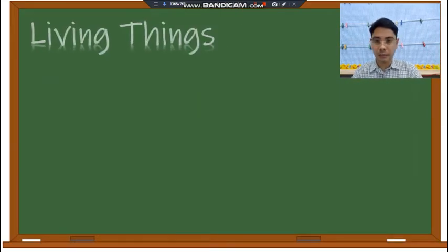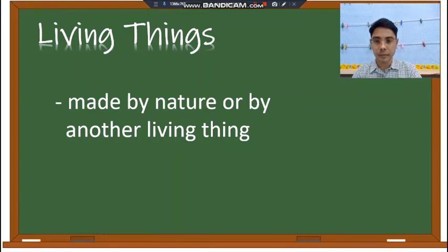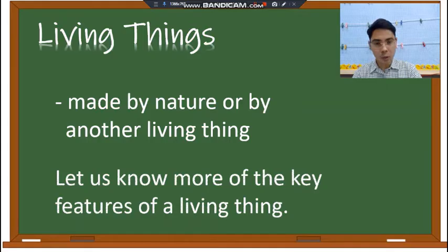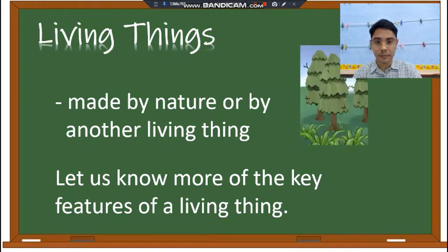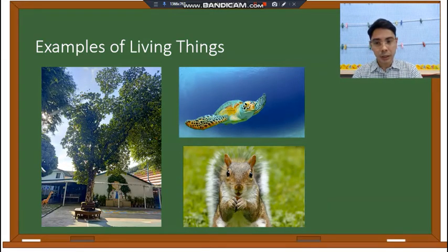Living things are made by nature, or made by another living thing. Let us know more of the key features of a living thing. When you say made by nature, it is made by another living thing. Here are some examples of living things: the tree, the turtle, and the squirrel. They are alive.